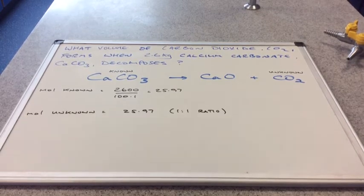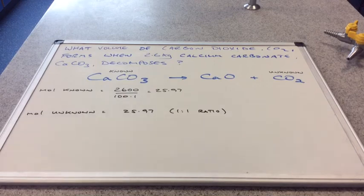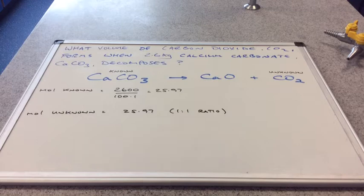Because of the one-to-one ratio between the known and the unknown, we obviously make 25.97, i.e. the same moles of carbon dioxide.